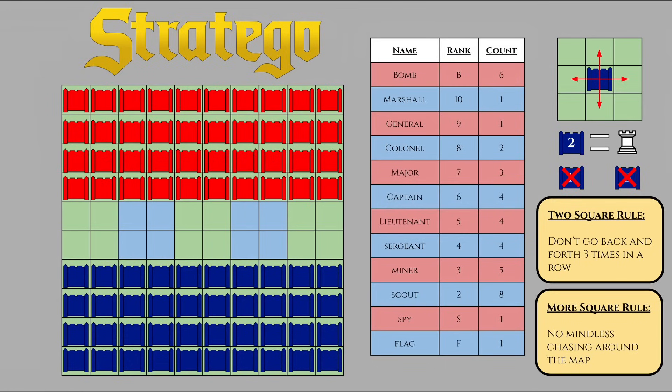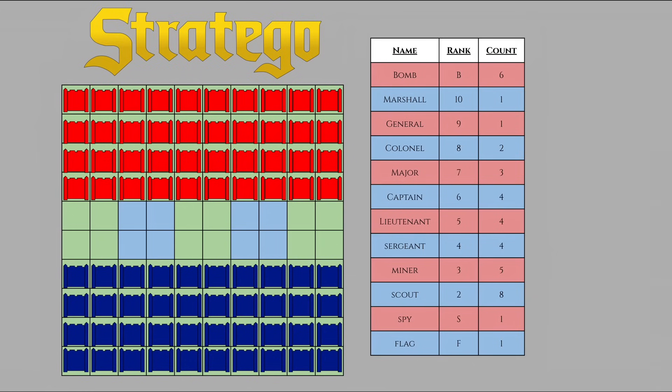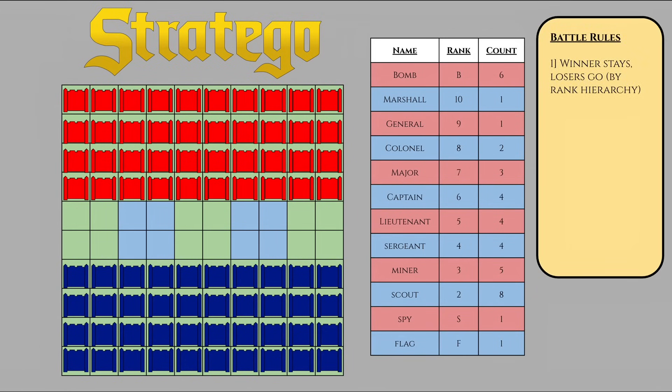If a player chooses to move one of their pieces into the square that an enemy piece occupies, a battle commences. The conditions are pretty straightforward. Whichever piece has a higher rank gets to stay on the square, while the piece that loses will be removed from the board. Ties mean that both pieces are removed from the board. If an offensive piece captures the enemy flag, then the offensive player wins the game. If an offensive piece attacks an enemy bomb, then both the bomb and the offensive piece are removed from the game.